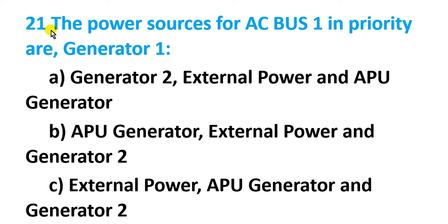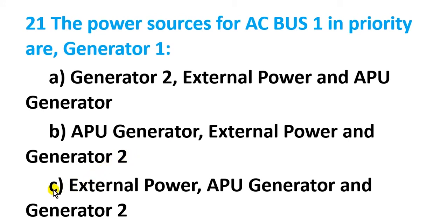The first question: what are the power sources for AC bus number one and their priority? The three options are: A - generator two, external power, and APU generator; B - APU generator, external power, and generator two; C - external power, APU generator, and generator number two.